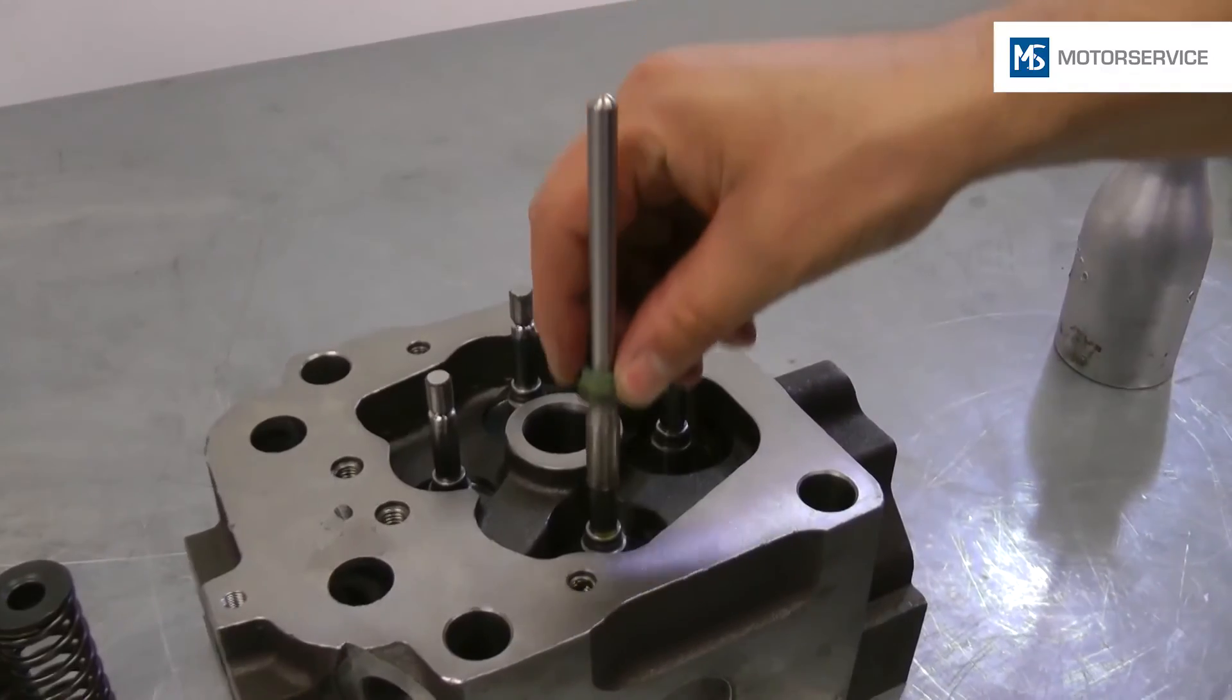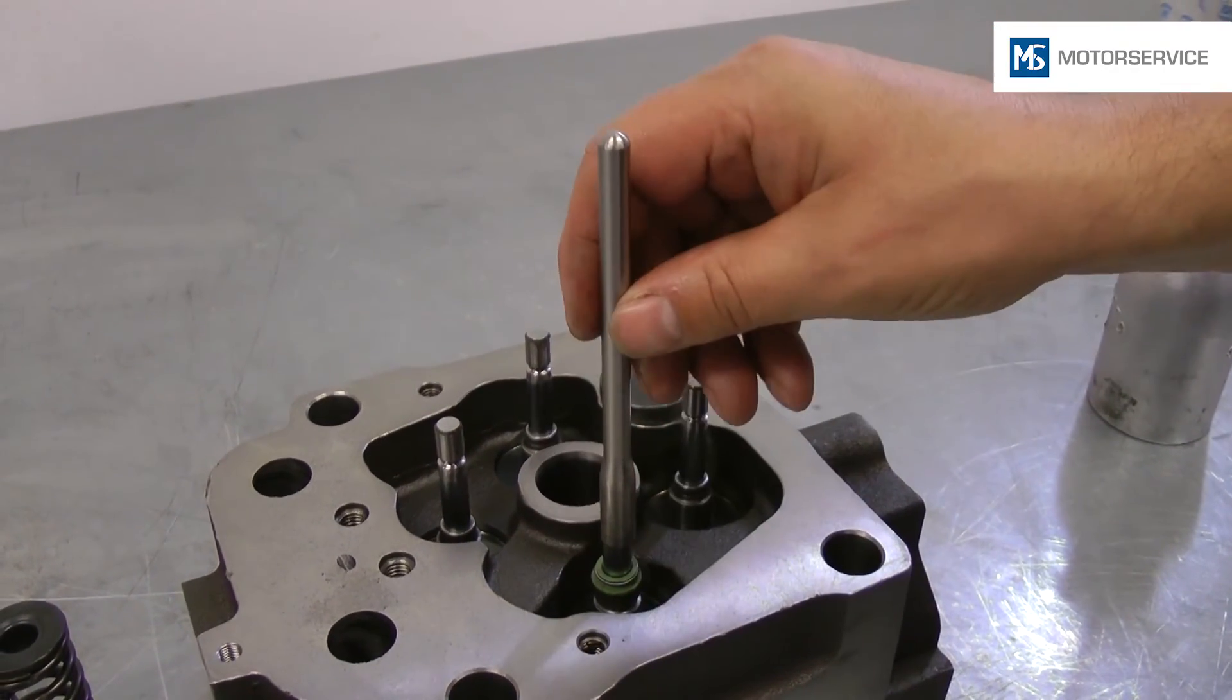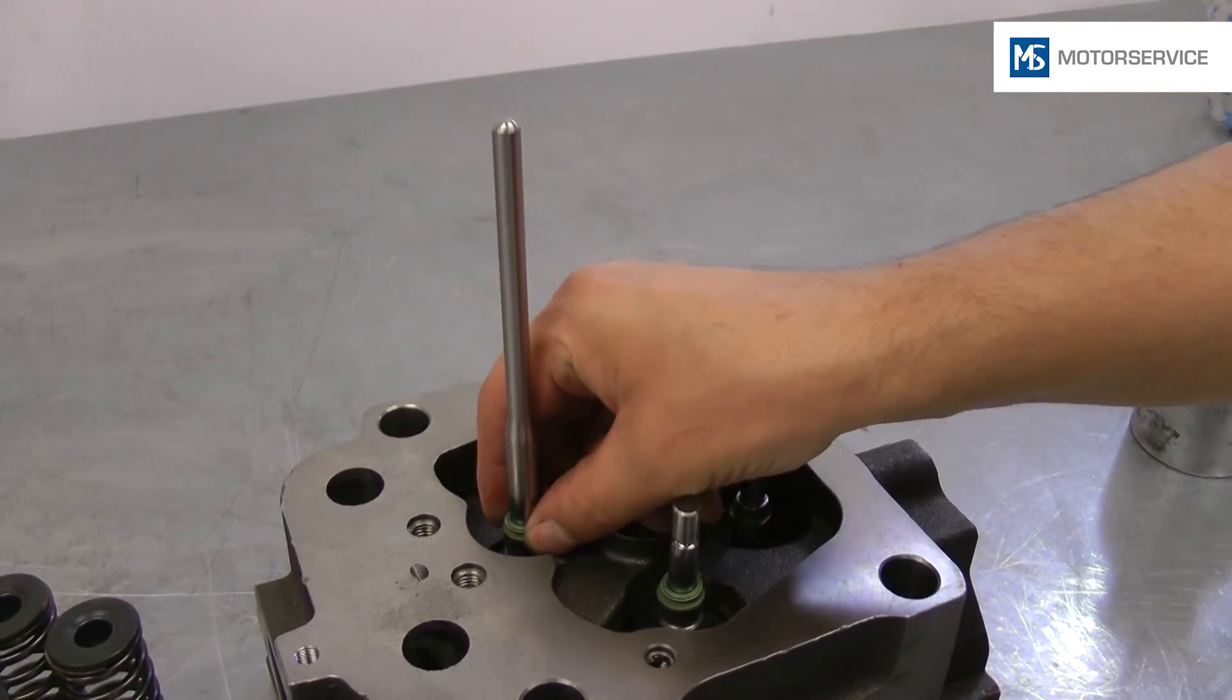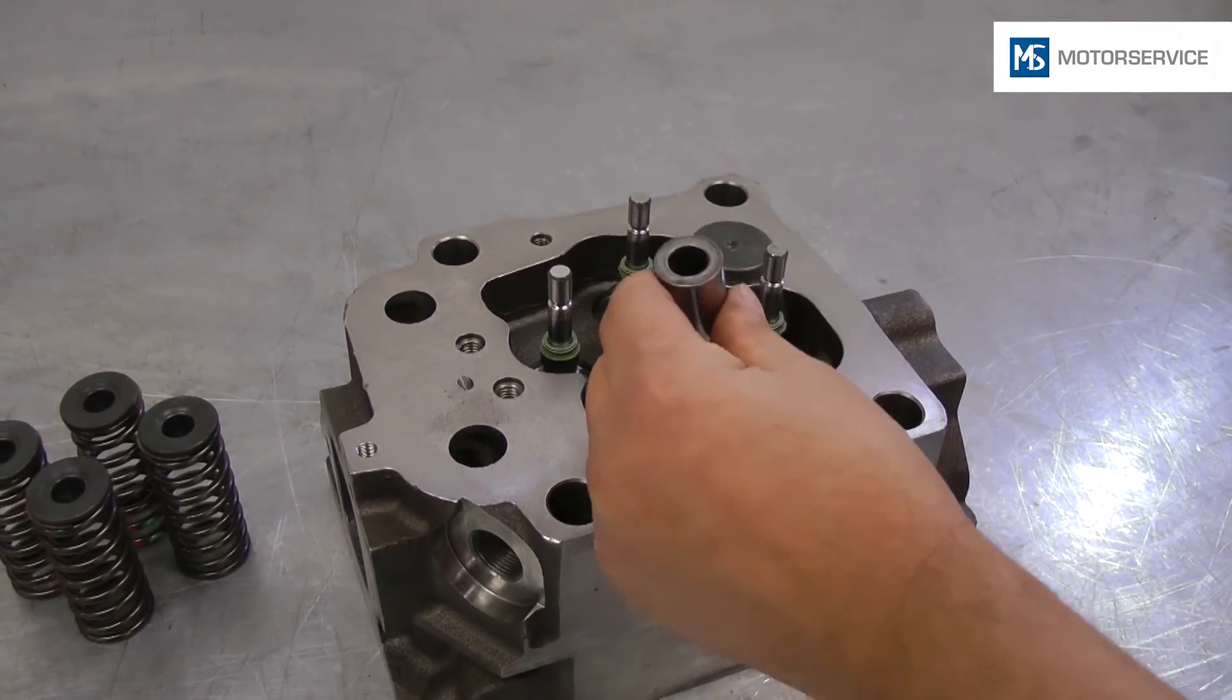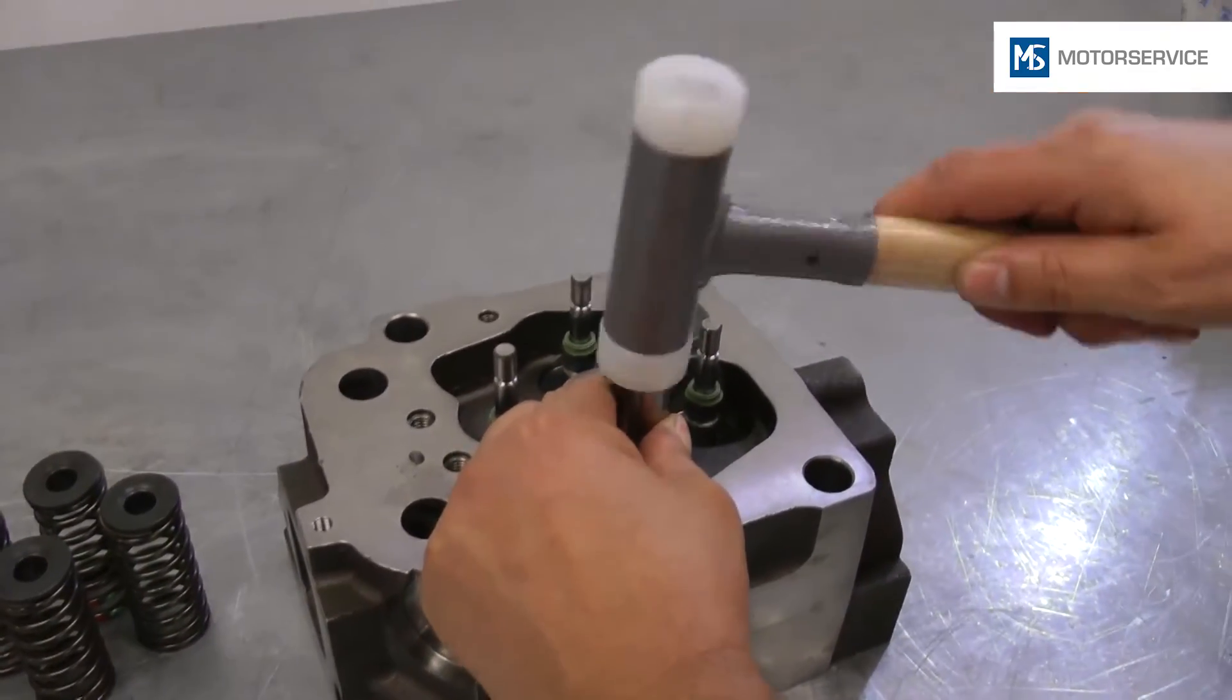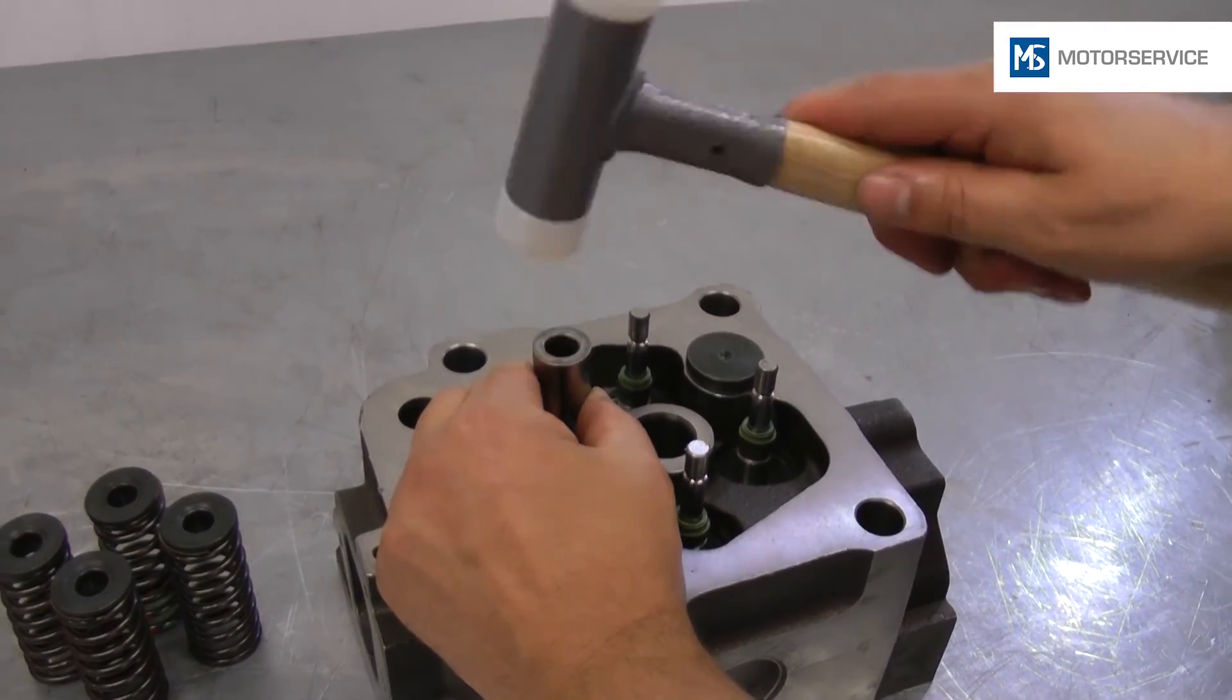Valve stem seals with a supporting body made of plastic are pressed onto the guides manually with a suitable assembly tool. Seals with plate girders are carefully placed in position with slight knocks by a plastic hammer. The seal is tight if a solid knocking noise is heard.